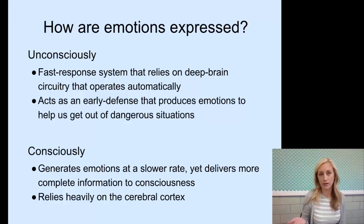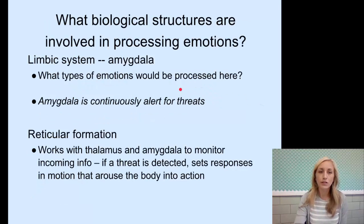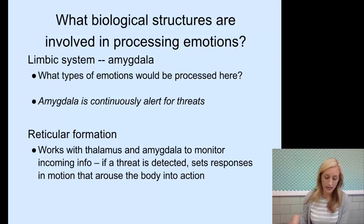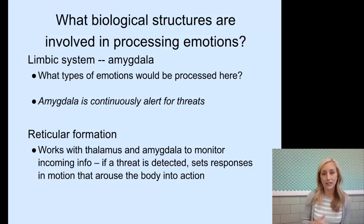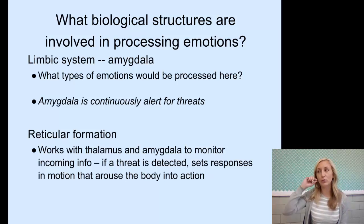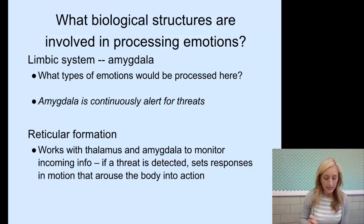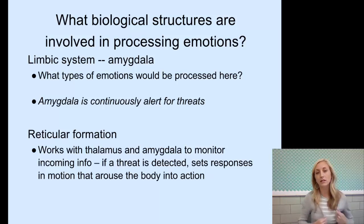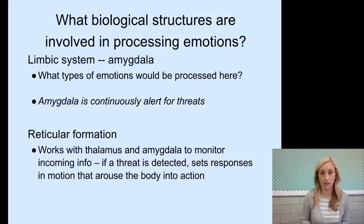It's a higher level of thinking — decisions about emotions. So let's talk about the biological structures involved with emotion. The big one is the limbic system with the amygdala. The emotions processed here are the more extreme end of fear and aggression. The amygdala is continuously alert for any kind of threat, and you will even pick up subliminal threats — ones that you are not consciously aware of. This contributes to our fight or flight response. The amygdala is what triggers biologically that unconscious alert fight-or-flight response, like in the middle of the night when there's a loud noise.